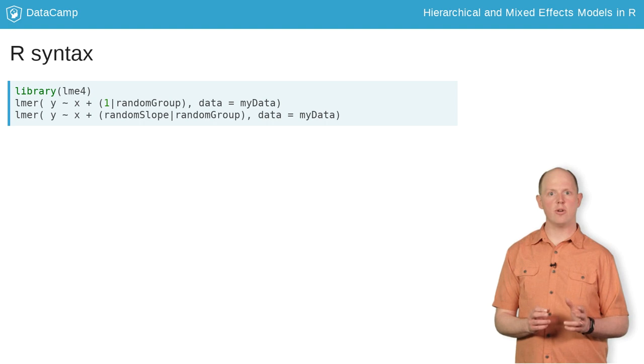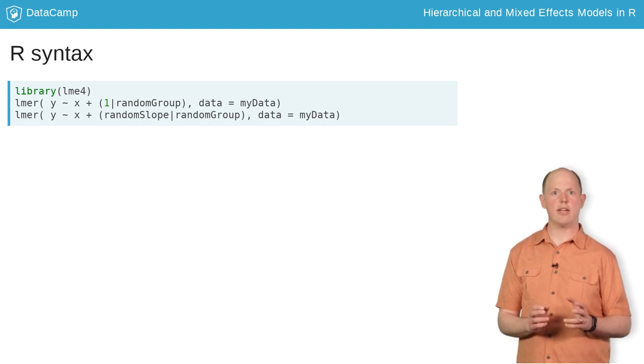With the LME4 notation, we need to specify a random effect. To specify a random intercept, we use parentheses with a one-pipe random effect group. On US keyboards, the pipe key is above the enter key on the right side of the keyboard. To specify a random slope, we use parentheses slope pipe random effect group.